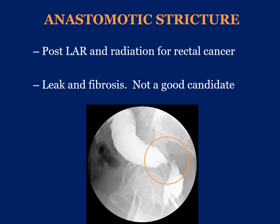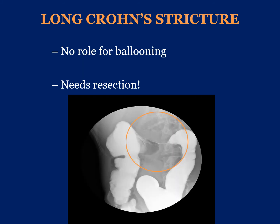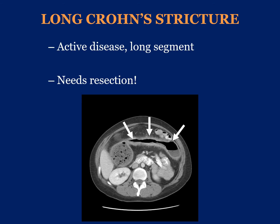In this patient with a history of rectal cancer, prior radiotherapy to the pelvis, and a previous anastomotic leak following low anterior resection, there is significant fibrosis and a persistent diverticulum posteriorly. This patient is not a good candidate and will not respond to balloon dilatation. Another case of Crohn's disease shows a long segment of transverse colon that is completely strictured — there is no role for balloon dilatation here, and this patient should be taken to the operating room for resection. A further Crohn's case on CT scan shows significant inflammation of the transverse colon over a long segment, and this patient would benefit from colectomy.